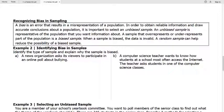So here's what we're doing for this example. We want to identify the type of sample and explain why it's biased. So in example 2a, we have a news organization asking viewers to participate in an online poll about bullying and we want to know why this is biased. So let's talk about what kind of survey this is first. This is a self-select sample.